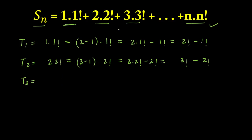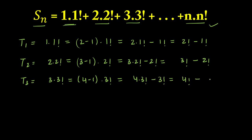For the third term: 3·3! can be written as (4 − 1)·3!. Multiplying inside gives 4·3! − 3!, and since 4·3! = 4!, this becomes 4! − 3!. We do the same for every term.